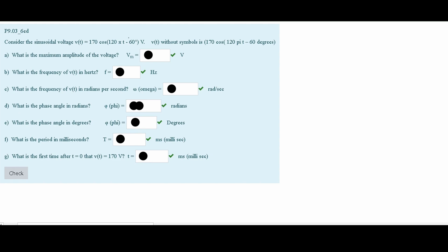First, we are asked what is the maximum amplitude of our voltage. Well, when we are given a sinusoidal equation like this, we know that the Vmax is always going to be the number outside of our cosine or sine. So that means our Vm is our Vmax, and this is going to be 170 volts.